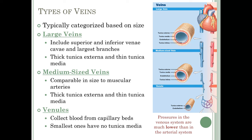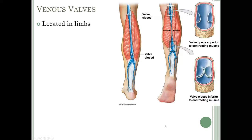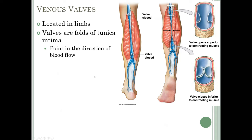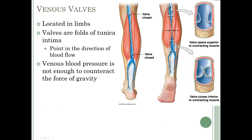Pressures in the venous system are much lower than in the arterial system, which explains why veins need valves. The veins in our limbs have valves — folds of the tunica intima pointing in the direction of blood flow. Venous blood pressure is not enough to counteract the force of gravity, so without these valves, blood would pool in the veins of the legs and not return to the heart. The valves prevent backflow and allow blood to continuously move toward the heart.